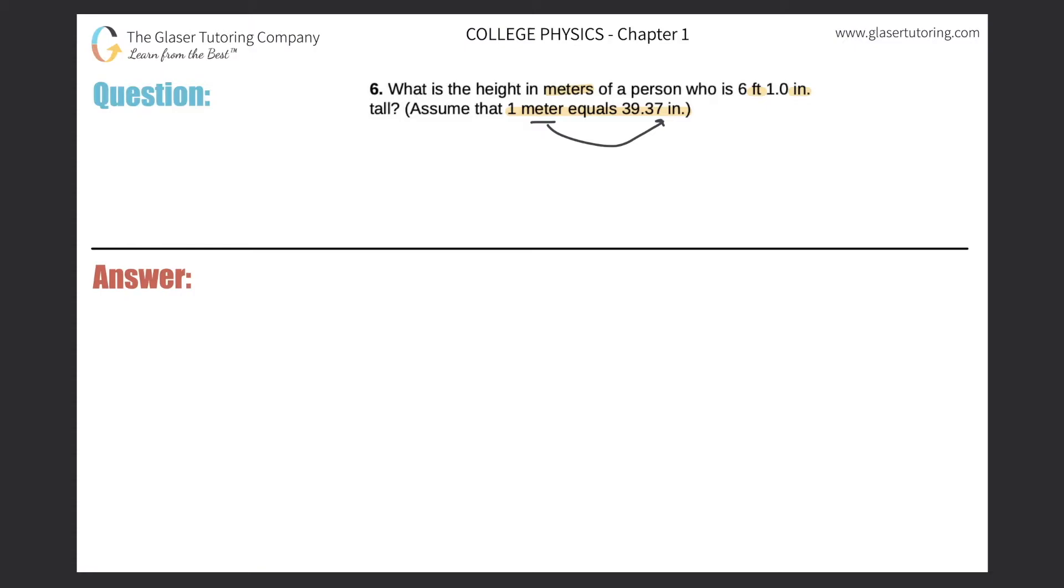Let's write down what we're given: 6 foot 1 inch person. Somehow we have to convert this into meters. We know that if we can find the total number of inches, we can then convert that into meters because they gave us the conversion factor in the problem.